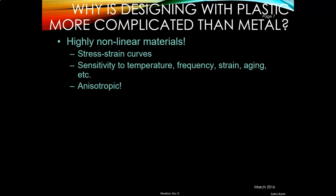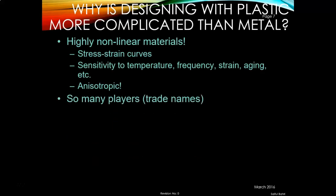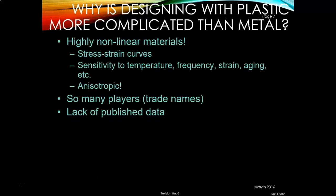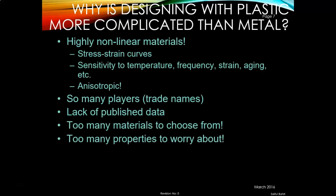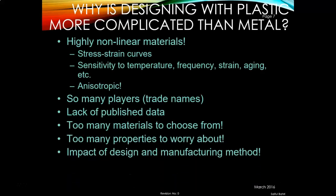Why is designing with plastic more complicated than with metal? First, plastic has highly non-linear material behavior — it exhibits a non-linear stress-strain curve and is sensitive to temperature, frequency, strain, aging, and so on. Plastics also show anisotropic behavior, which is not ideal. They also have many trade names, lack of published data, too many materials to choose from, too many properties to worry about, and the impact of design and manufacturing method adds further complexity.